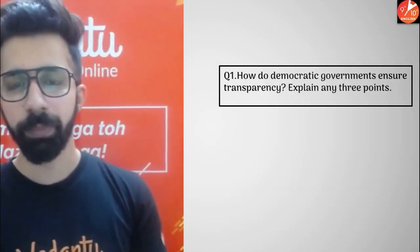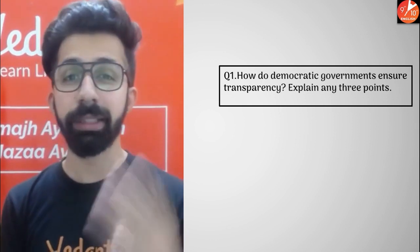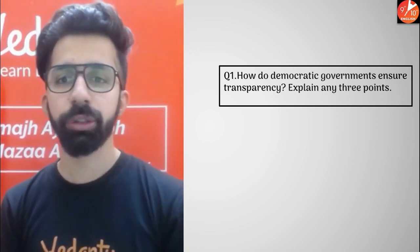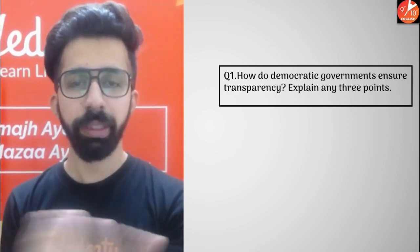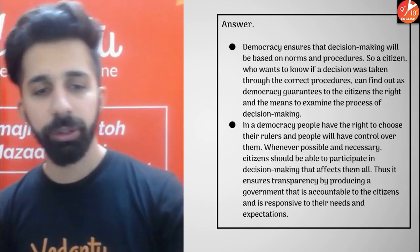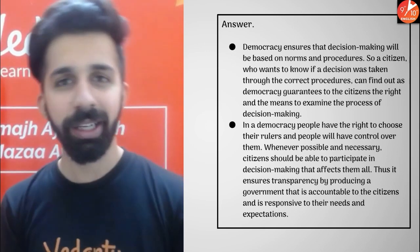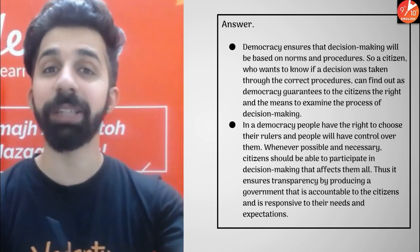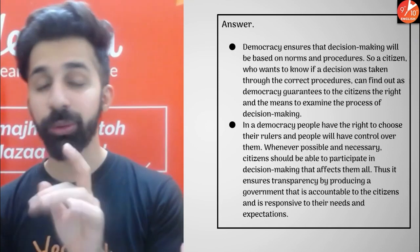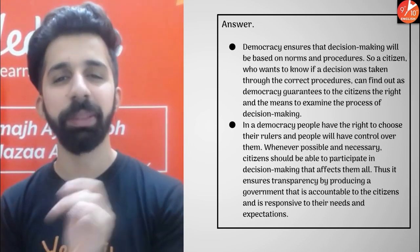The very first question on your screen: How do democratic governments ensure transparency? Explain any three points. So if the question is expecting any three points, this can come for three marks. Be careful. Democracy ensures that decision making will be based on norms and procedures — some rules and regulations. The democratic system is basically legitimate in nature. A citizen who wants to know if a decision was taken through the correct procedures can find out.